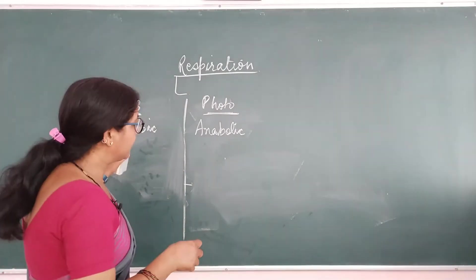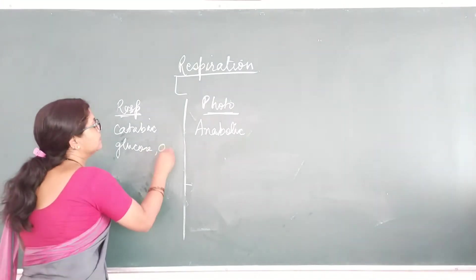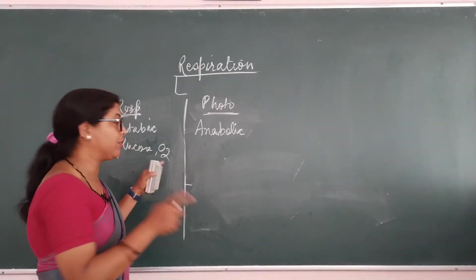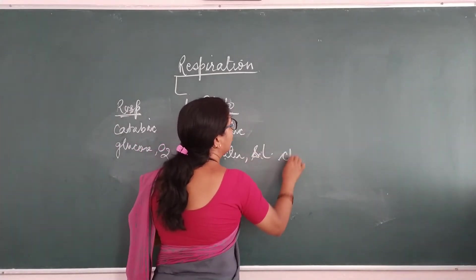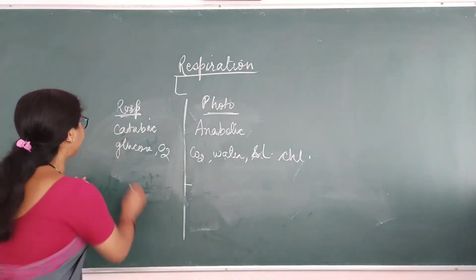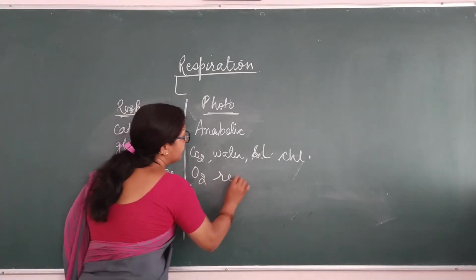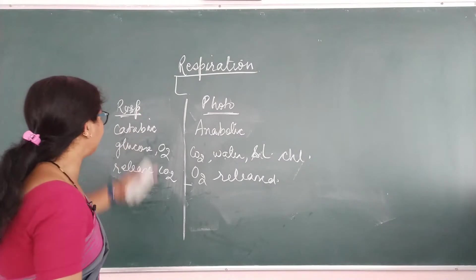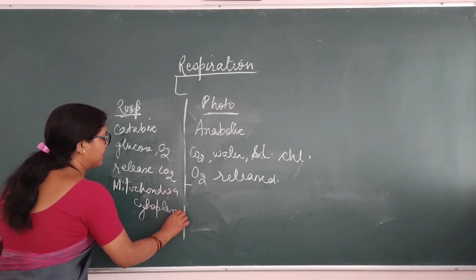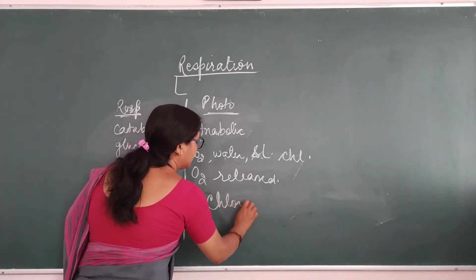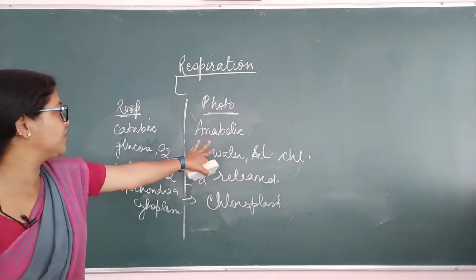The raw material of respiration is glucose and oxygen. In the absence of oxygen, glucose is broken down. The raw materials of photosynthesis are CO2, water, sunlight, and chlorophyll. During respiration, CO2 is released, but during photosynthesis, O2 is released. Respiration occurs in the cytoplasm and mitochondria, while photosynthesis occurs in the chloroplasts of plant cells. These are the key differences between respiration and photosynthesis.